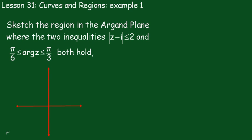Lesson 31: Curves and Regions, Example 1. We have to sketch the region on the Argand plane where two inequalities hold: the modulus of z minus i is less than or equal to 2, and the argument of z lies between π/6 and π/3.